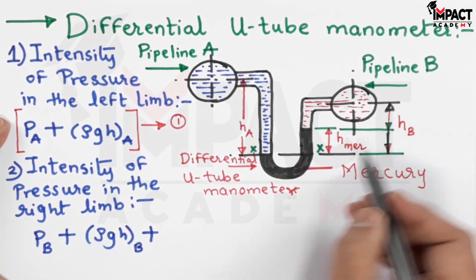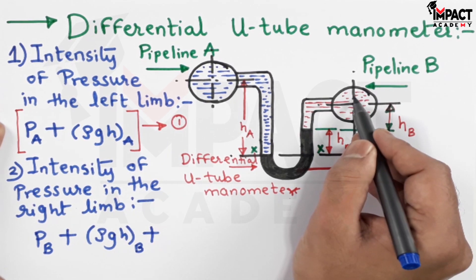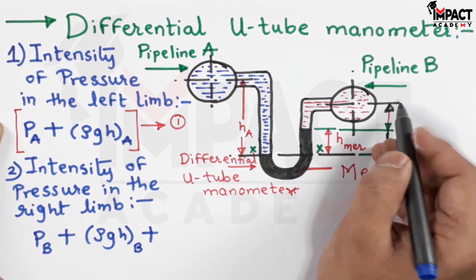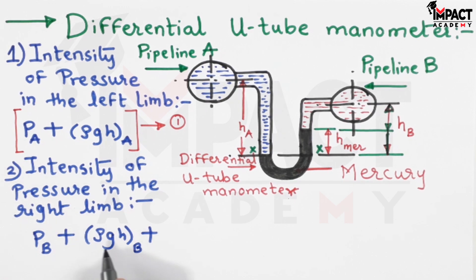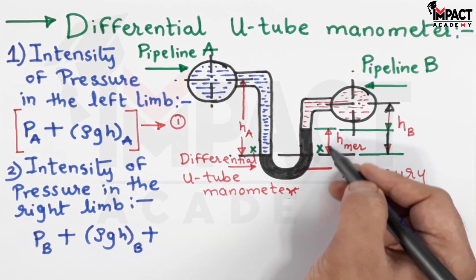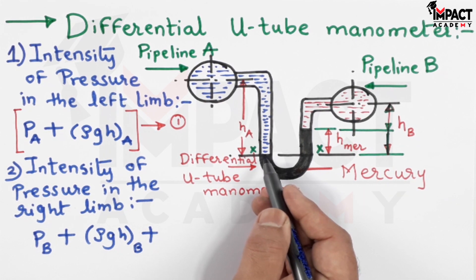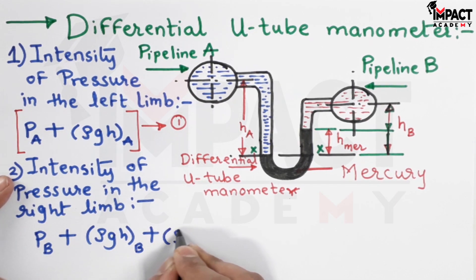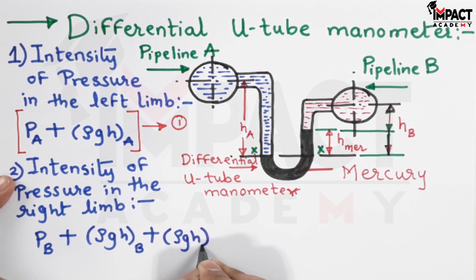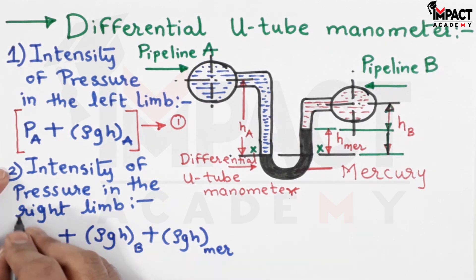Now in the right limb, above section XX there is pressure exerted by the fluid in pipeline B, which is PB. HB is the height of the liquid column in the right limb, so the pressure exerted is ρB × g × HB. We also have the height of mercury HM — the mercury level in the left limb was zero while in the right limb it is HM — so the intensity of pressure from mercury is ρ_mercury × g × HM. This becomes equation number two.